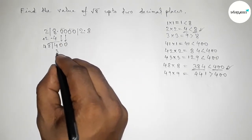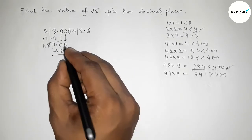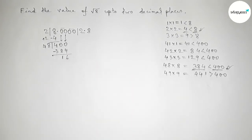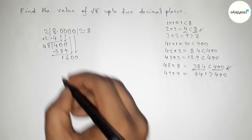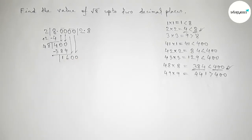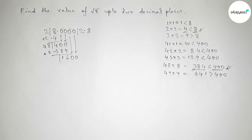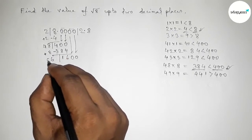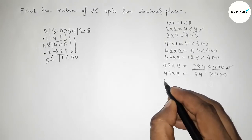Putting 8 here and writing down 384. Subtracting from 400 gives 16. Next, write down the remaining pair of zeros and draw a division line. The last quotient digit is 8, so we add 8 plus 8 equals 16, carry 1, making this 56.